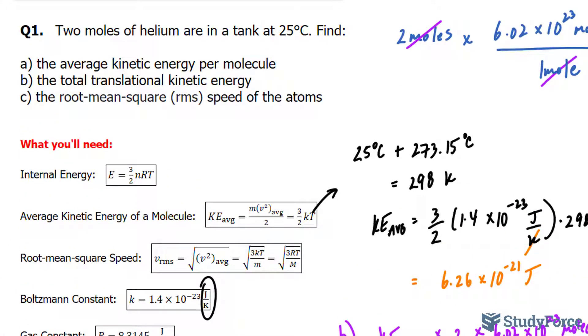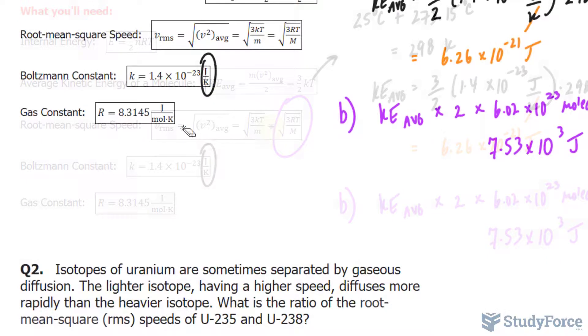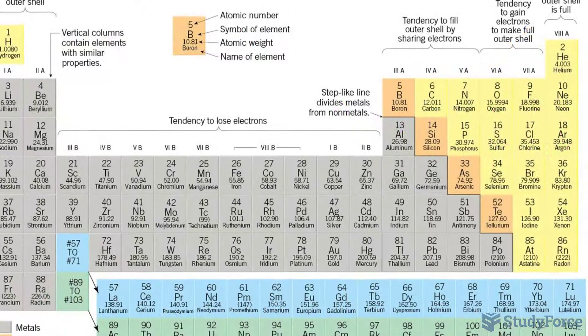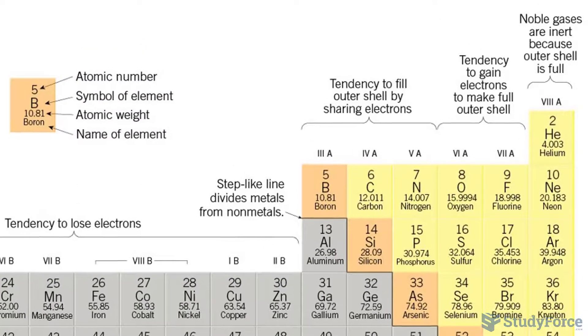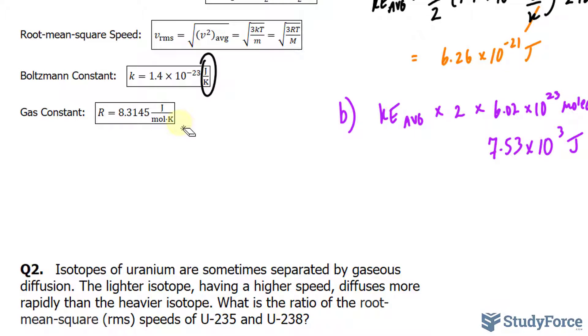And finally for C, the root mean square or RMS speed of the atoms. The root mean square is calculated using the square root of 3 times R times T over M. That capital M stands for the molar mass. And in this case, it's the molar mass of helium. If you take a look at a periodic table as shown on your screen, the molar mass is roughly 4.0 grams per mole. Except we need to make it into kilograms per mole because the gas constant has joules. And joules, if you break it down into its units, it's kilograms times meters squared per second squared. So that needs to be made into kilograms per mole when we do the calculation.